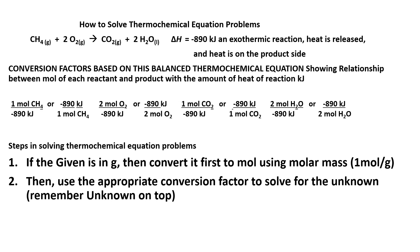How to solve thermochemical equations. We have here a balanced equation: burning of methane, CH4 plus 2 oxygen gas, yields carbon dioxide gas plus 2 moles of H2O liquid. The heat of reaction is negative 890 kilojoules. This is an exothermic reaction because heat is released.